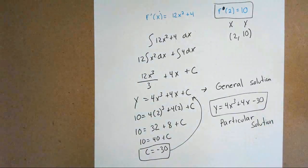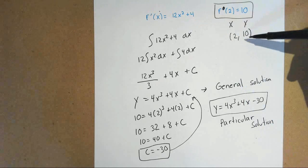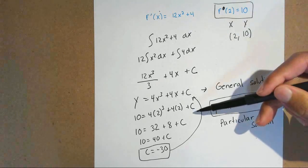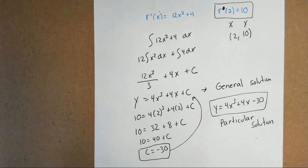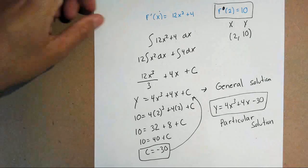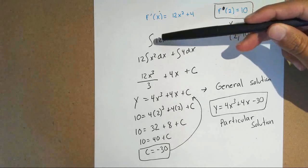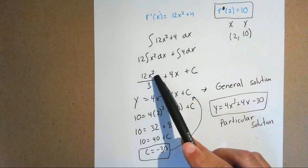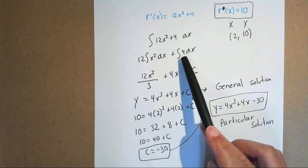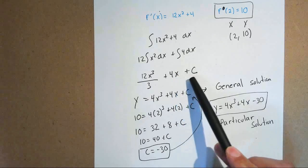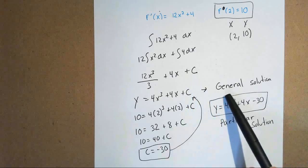You're only asked to find a particular solution when given an initial condition. They must give you your derivative and an initial condition — that's the only way to find C. Without an actual point, you'll just have a general solution. So anytime the integral symbol appears, apply the antiderivative: add 1 to the exponent and divide by the new exponent for variables, or add the variable for constants. Don't forget plus C for the general solution. Thanks for watching, hope it helped.